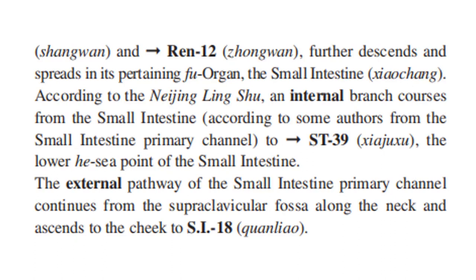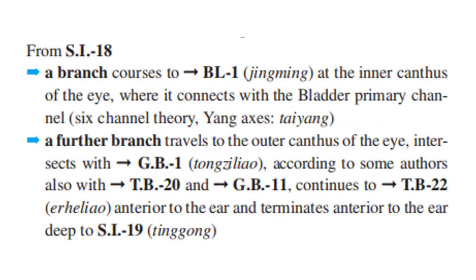The external pathway of the small intestine primary channel continues from the supraclavicular fossa along the neck and ascends to the cheek to SI18. From SI18, a branch courses to Bladder 1 at the inner canthus of the eye, where it connects with the bladder primary channel — the six-channel paired tai yang axis. A further branch travels to the outer canthus of the eye, intersects with Gallbladder 1, and according to some authors also with Triple Burner 20 and GB11, continuing to TB22 and terminating at the ear deep to SI19.